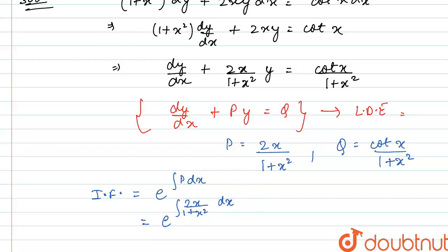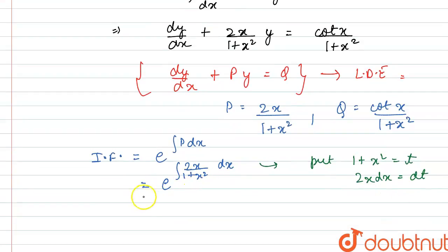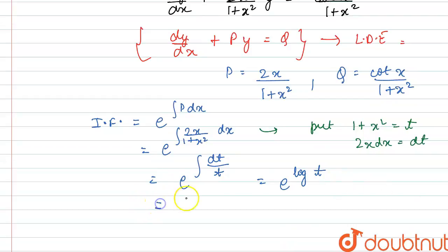For solving this integral, we simply put 1 plus x square as equals to t. Now differentiate both sides, so we get 2x dx is equals to dt. So this integral will become e raised to the power integral of dt divided by t. We know integral of dt by t is log t. Now using the property of log, e raised to the power log t gives us t. Putting back the value of t which is 1 plus x square, we get the integrating factor as 1 plus x square.